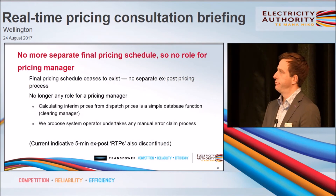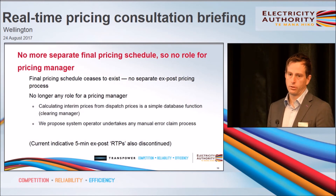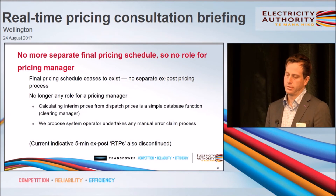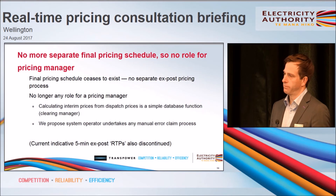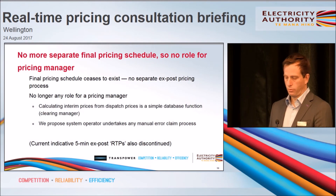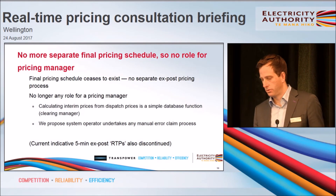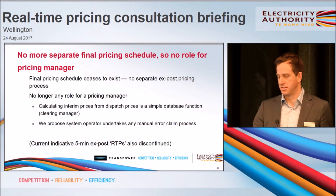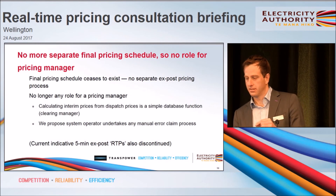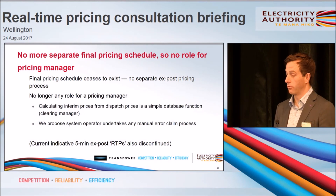It should be fairly obvious there'll be no more separate final pricing schedule, because there's no separate final pricing process any longer, meaning there's really no longer any role for a pricing manager. The one residual job — calculating interim prices from the set of dispatch prices — is a fairly simple mathematical function, so we've proposed the clearing manager takes that on, publishing immediately to WITS. We're also proposing the system operator undertakes the manual error claim role as opposed to the pricing manager. The current indicative RTPs will be gone — we did toy with redefining 'real-time pricing' in the code but decided that would be too confusing.